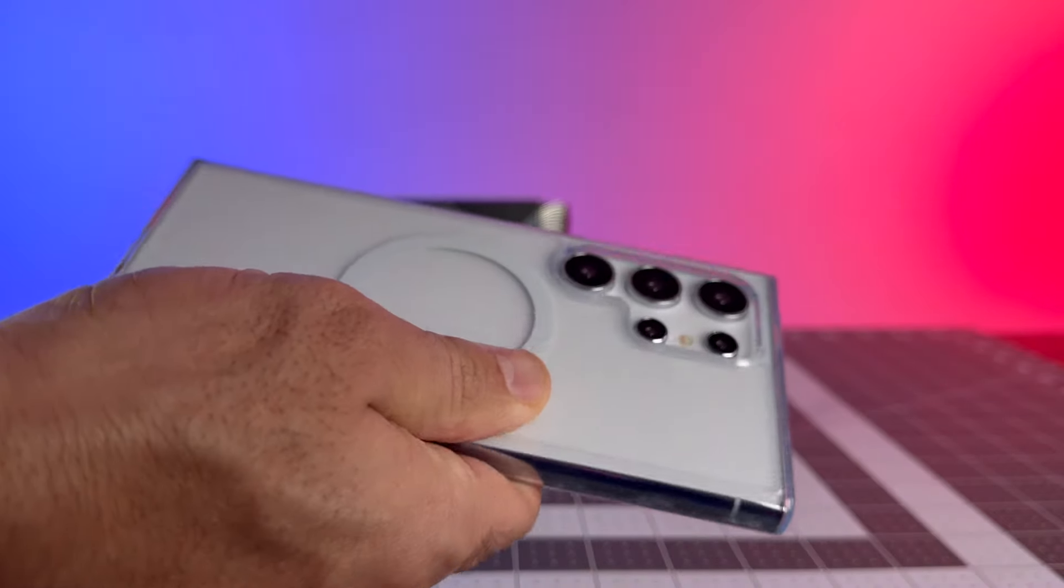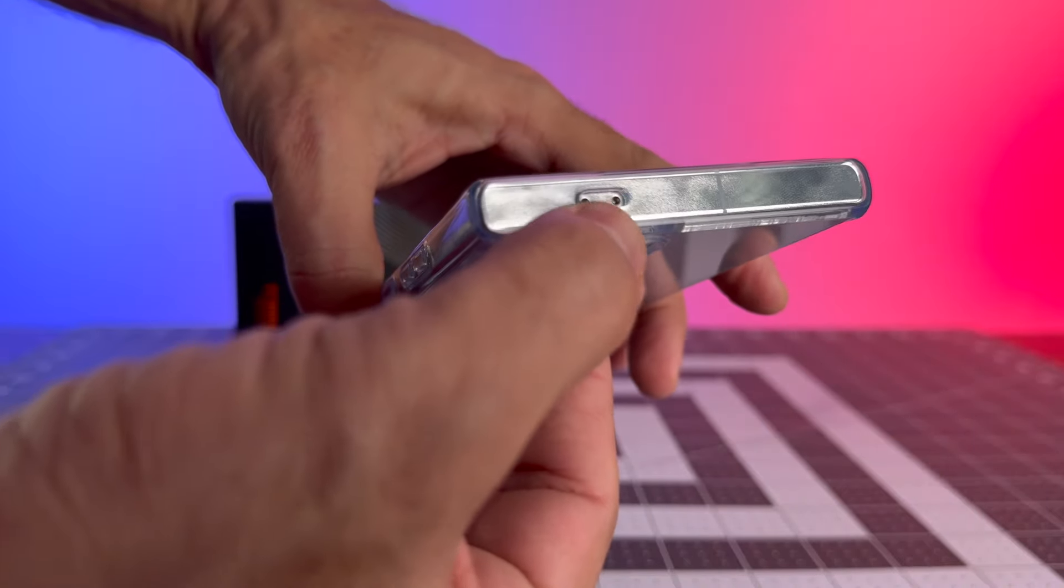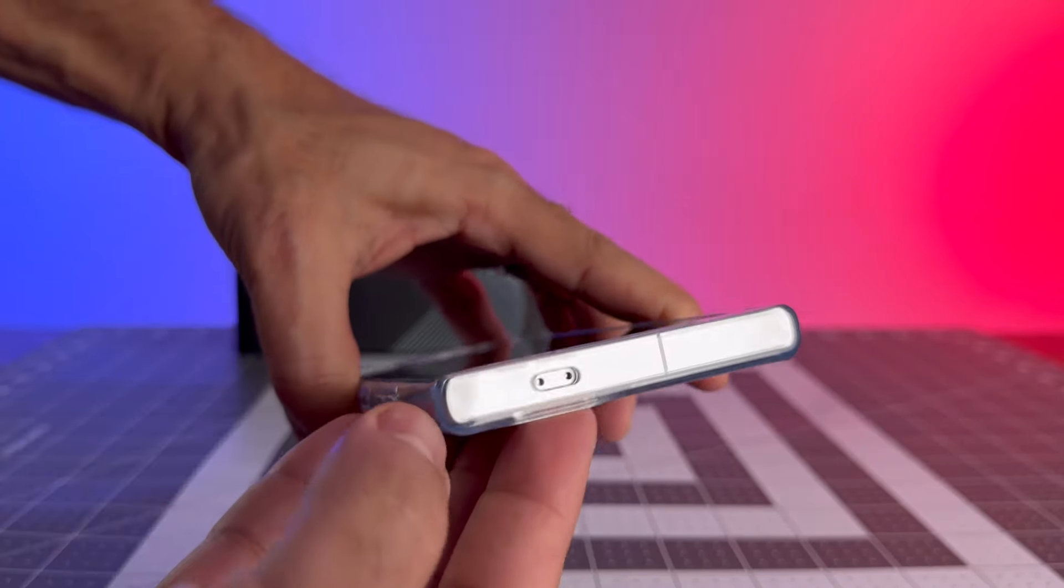Now let's talk about that crystal clear design. Taurus doesn't compromise on looks. This case showcases your Galaxy S24 Ultra's sleek design in all its glory.